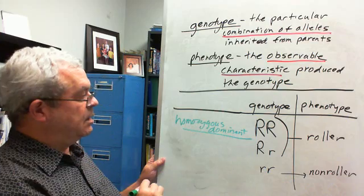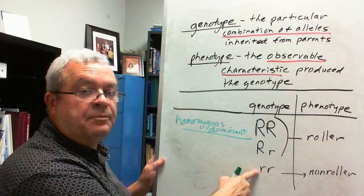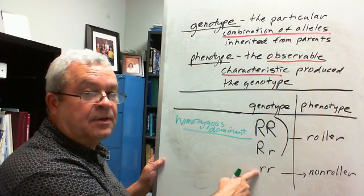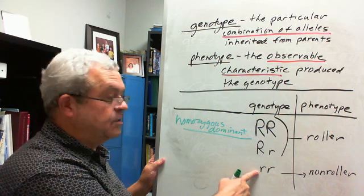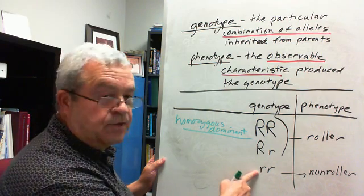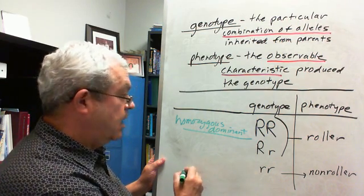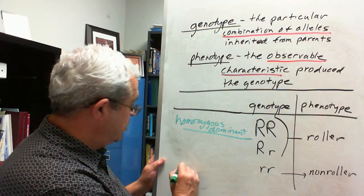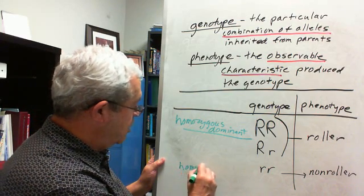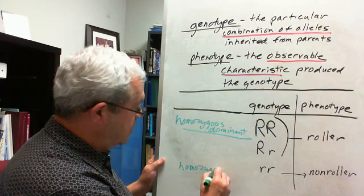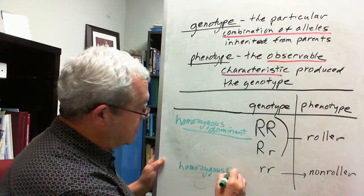That's one possibility. If the genotype has the two recessive alleles, like my oldest daughter, oldest biological daughter, I should say, then the genotype is what? Homozygous recessive.